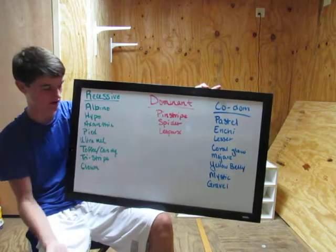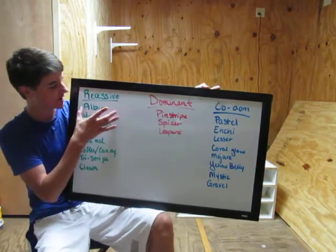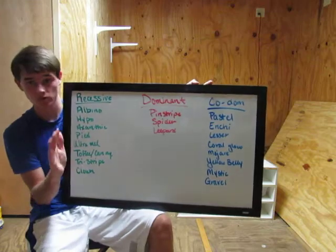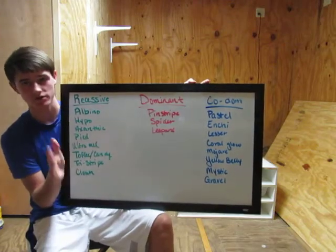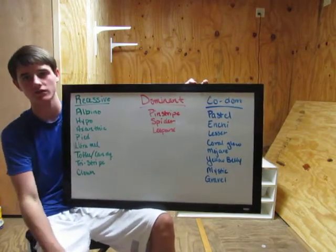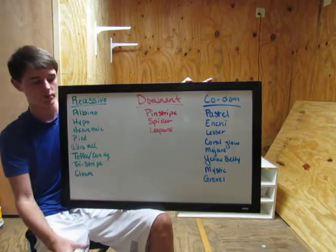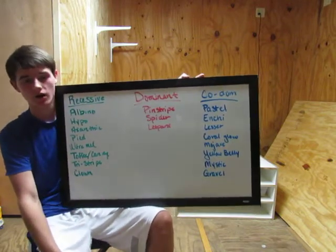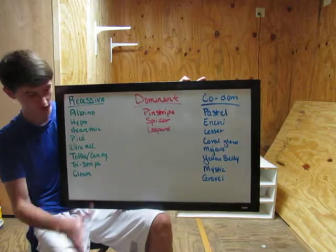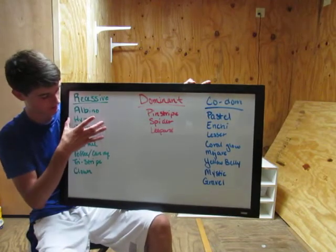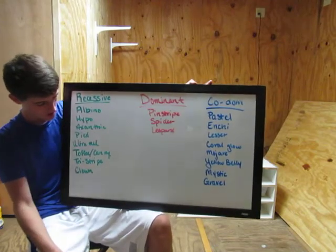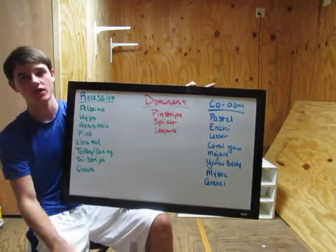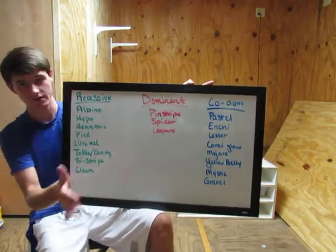Say you bred two different recessives together — an albino to a hypo. You will not produce albinos and you will not produce hypos, but absolutely everything in the clutch will be het albino, het hypo, or double hets. They'll all be normal-looking but double het albino hypo. That works with anything — if you bred a pie to an axanthic, everything will be double het axanthic pie.